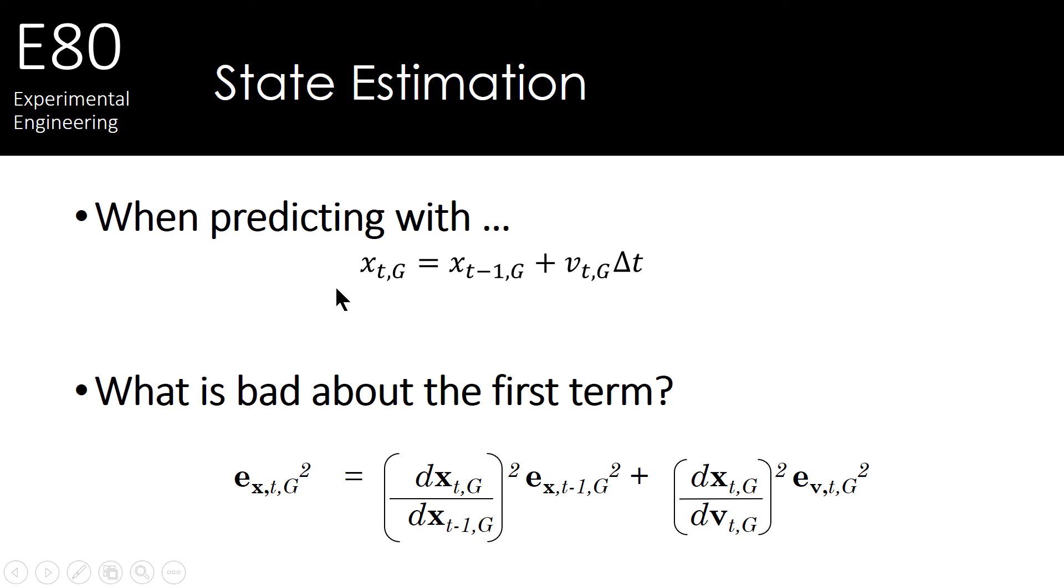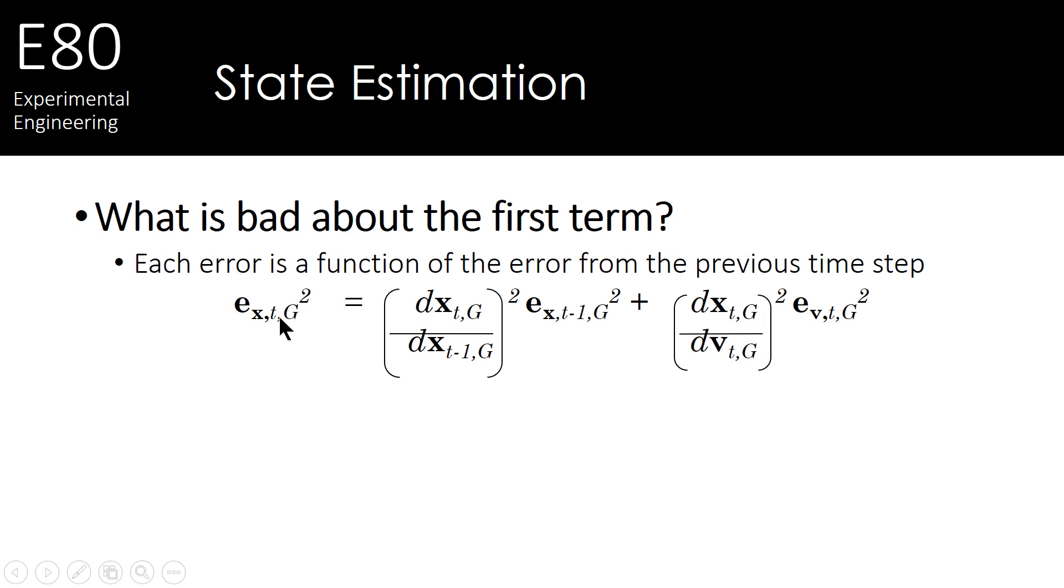Now these errors are related through the sensitivity functions or derivatives. Well, how sensitive is our position to our previous position? That's what this captures. And of course you should be able to take derivatives at this point. But what you'll see is this error is a function of the previous error. And that term is a function of the error before it. And so on and so on. So every error is going to be a function of the previous error. And this error will then obviously accumulate over and over and over for every time step. And as time goes on, these errors will accumulate and grow and grow and grow. Doesn't seem good.